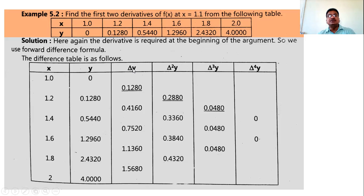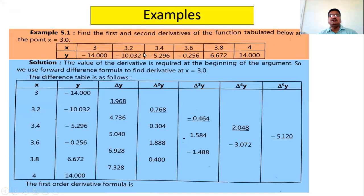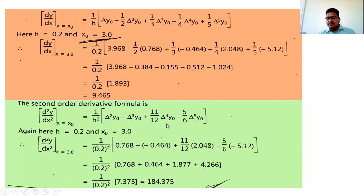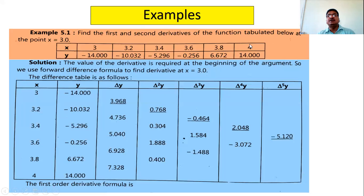Recall from the previous lecture: when finding the first and second order derivative at a point that is present in the table and at the beginning of the table, we use the formulas dy/dx at x = x₀. These specific formulas apply when the value is given in the table and at the beginning of the table.